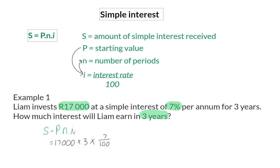When you do this calculation, you will get an interest amount of 3,570 Rand. And even though this was not asked, it is good to realize that Liam started with 17,000 Rand and he earned an interest of 3,570 Rand. That means his account is now worth 20,570 Rand. Our second formula will directly calculate this amount.